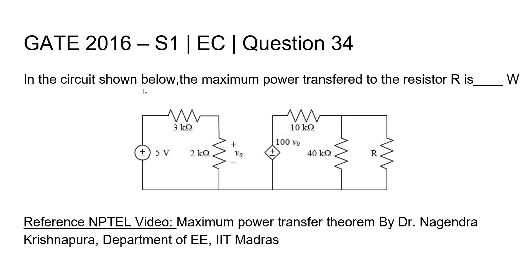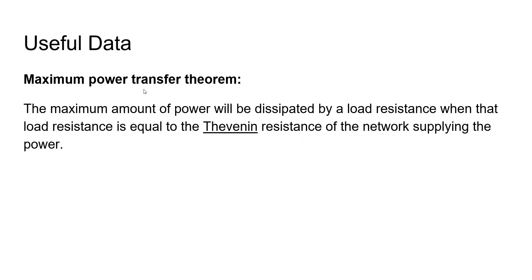This is a numerical answer type question. For a detailed lecture on this concept, please refer to the NPTEL video 'Maximum Power Transfer Theorem' by Dr. Nagendra Krishnakura, Department of Electrical Engineering, IIT Madras. Let's have a look at this theorem and then solve this problem. The theorem states that the maximum amount of power will be dissipated by a load resistance when that load resistance is equal to the Thevenin resistance of the network supplying power.